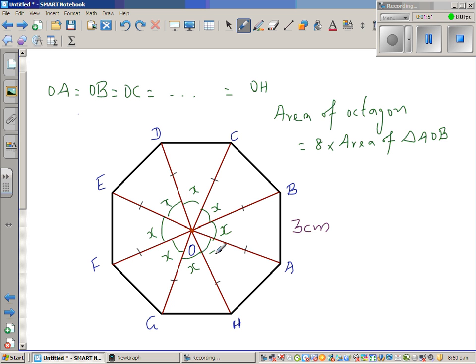So there are how many X's? 8 X, 1, 2, 3, 4, 5, 6, 7, 8. So let me change color. So can I say 8X is equal to how much? Angles at the point adds to 360. So 8X is 360 divided by 8, which is say 180 divided by 4, which is 90 divided by 2, which is 45 degrees.